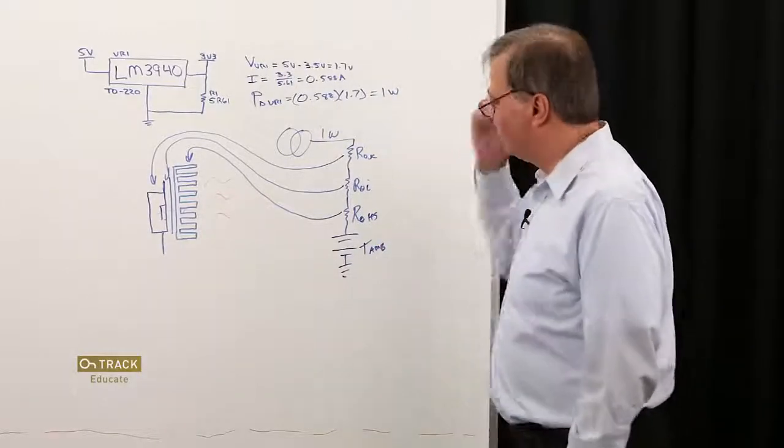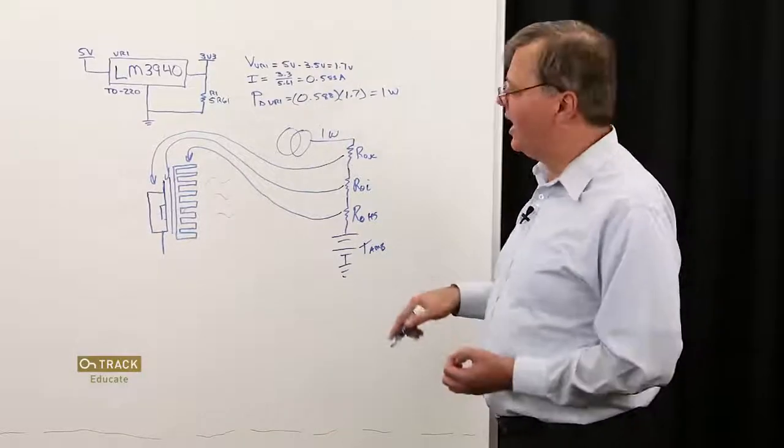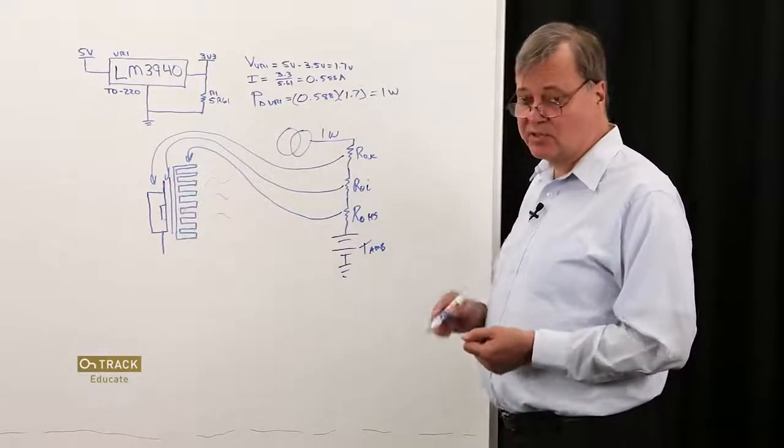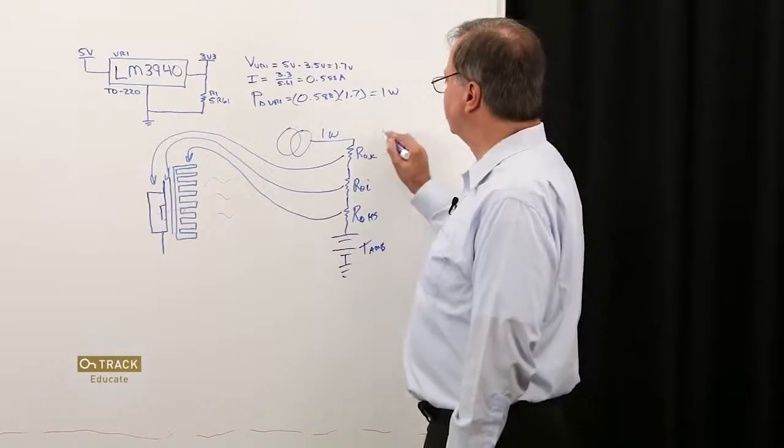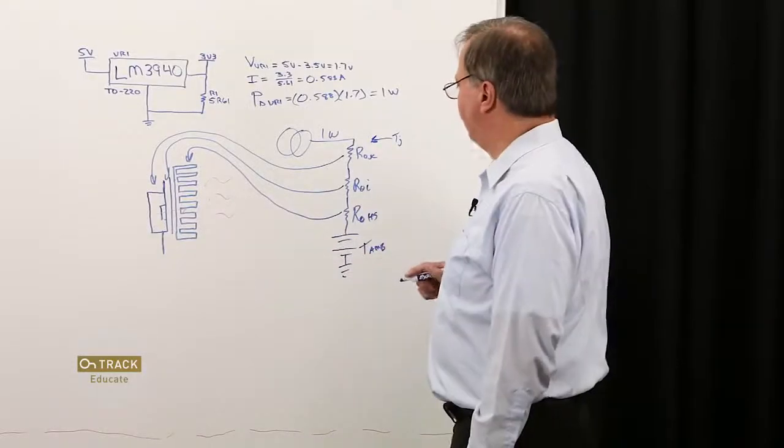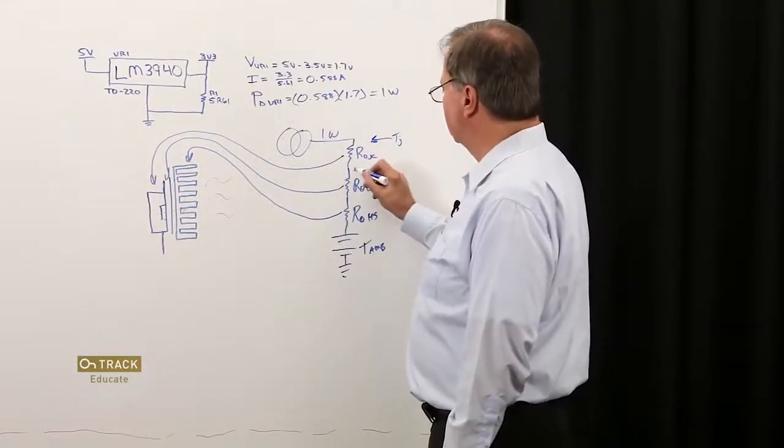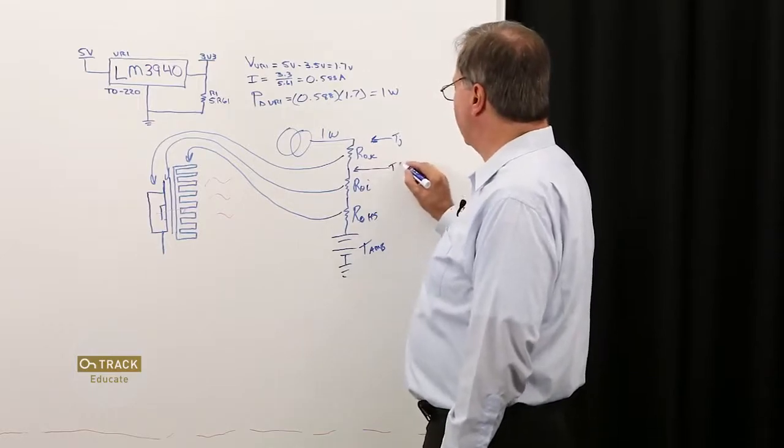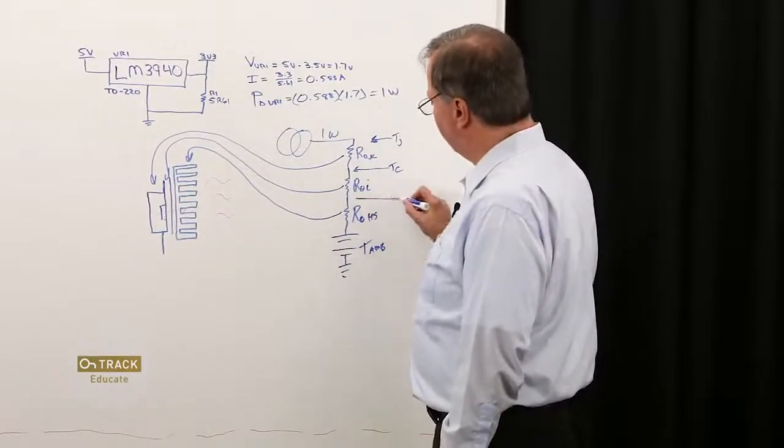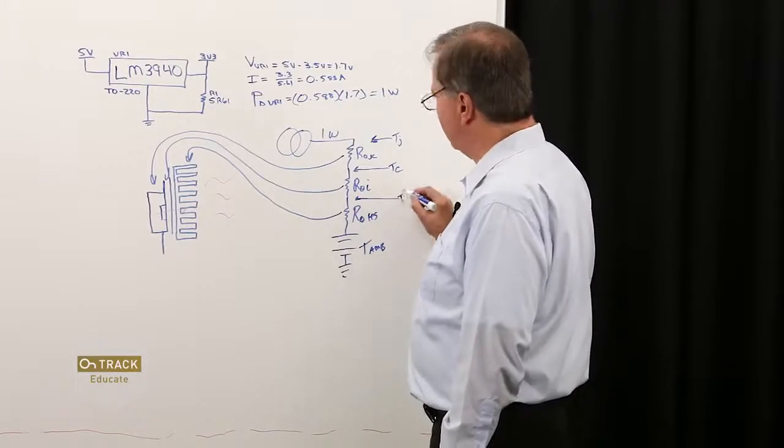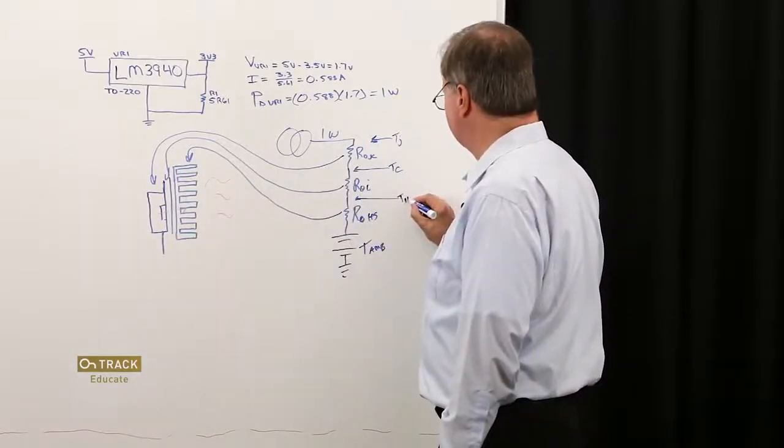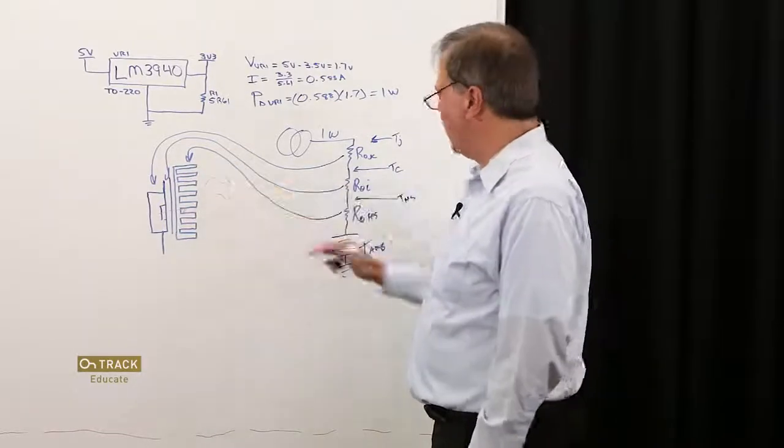Just like in an electrical circuit, when we have current flowing through electrical resistors, when we have heat flowing through thermal resistors, we get a temperature differential. So, the first temperature up here at the top is going to be our temperature of our junction of our semiconductor device. The next temperature point will be the case temperature of the back of our TO220 package. Then, we have the temperature at the secondary side of our interface material, which is the heat sink temperature, and then the temperature of our ambient environment.